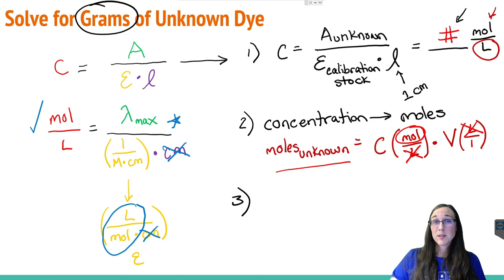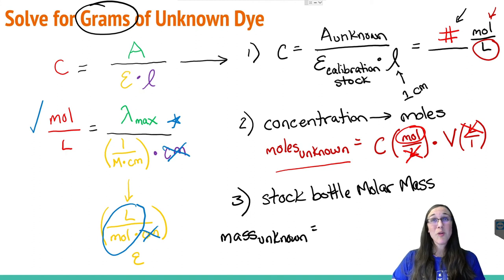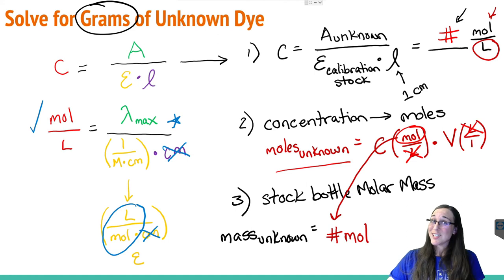So step three would be to use the molar mass of your stock bottle or stock sample of chemical in order to cancel out the moles and be left with grams as follows. To find your mass of unknown sample, you'll simply take the mole value you found in step two and multiply it by the molar mass provided to you in the lab on a stock bottle in grams per mole. Mole now cancels from top and bottom and you'd be left with grams.